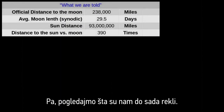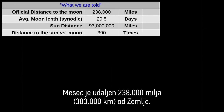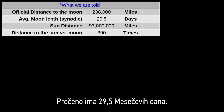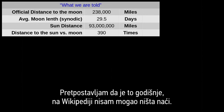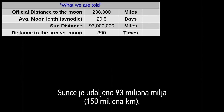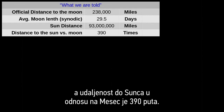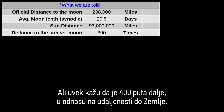So, let's look at what they've told us so far. The moon is 238,000 miles away from the earth. There's 29.5 average moon days — that's a synodic — I'm assuming that's on a yearly basis, couldn't really find that on Wikipedia. The sun is 93 million miles away, and the distance to the sun versus the moon is 390 times, but they were always saying it's 400 times further away than the moon is to the earth.